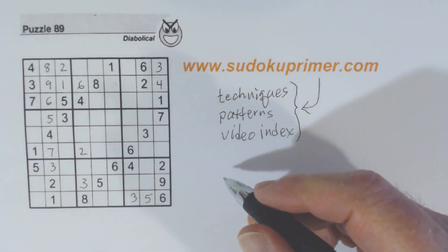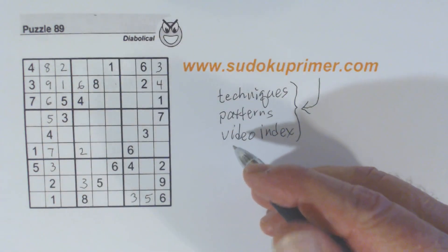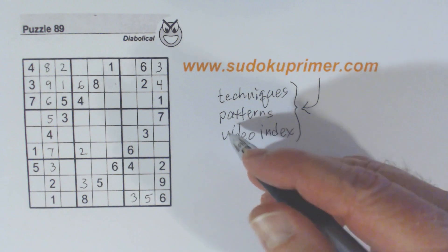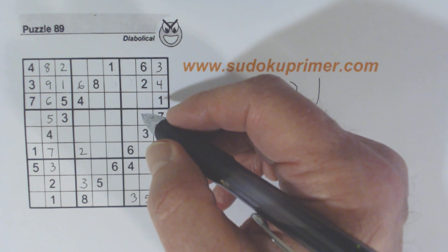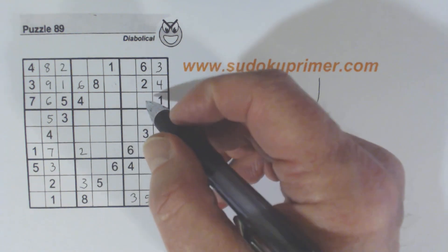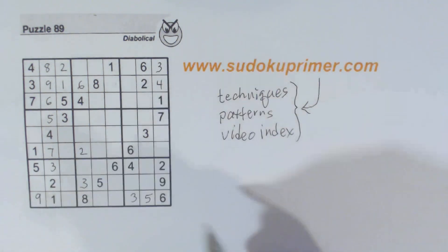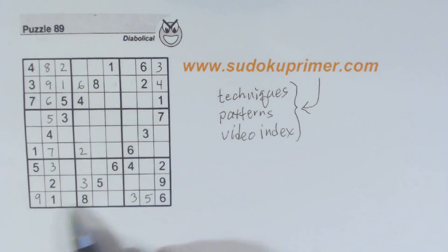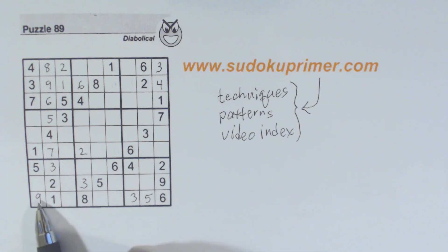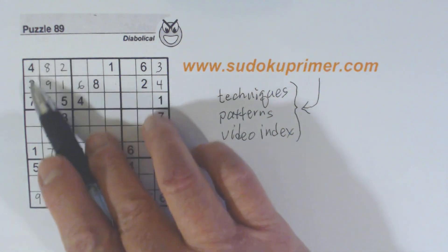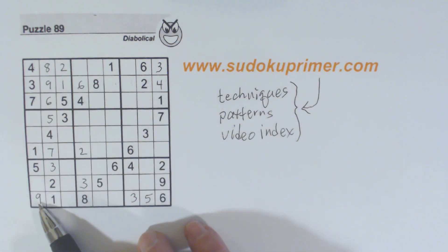We've got a nine right there. How did we get that nine? Let's see what we're missing in row nine — two, four, seven, nine are missing. We've got a two here and a four and a seven in that column, so we know that's a nine.